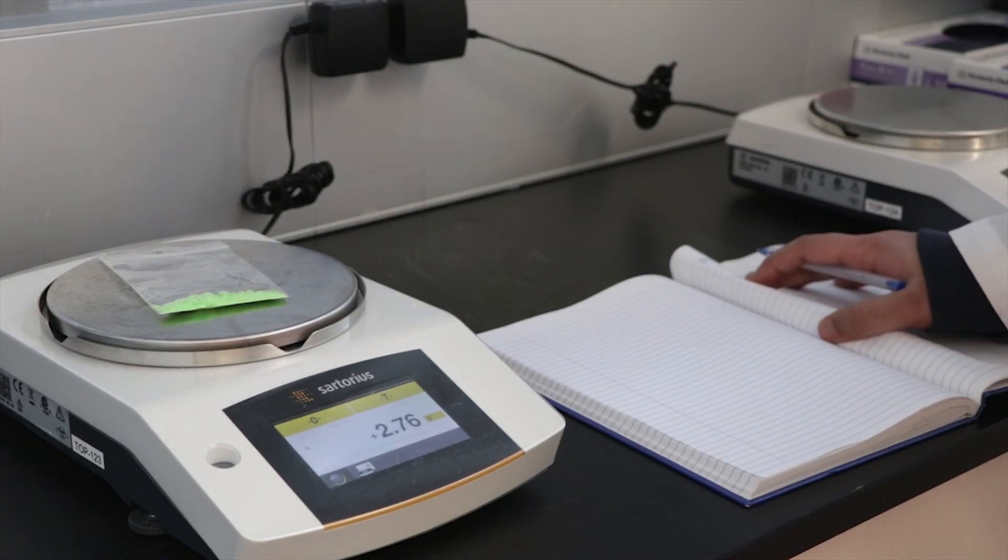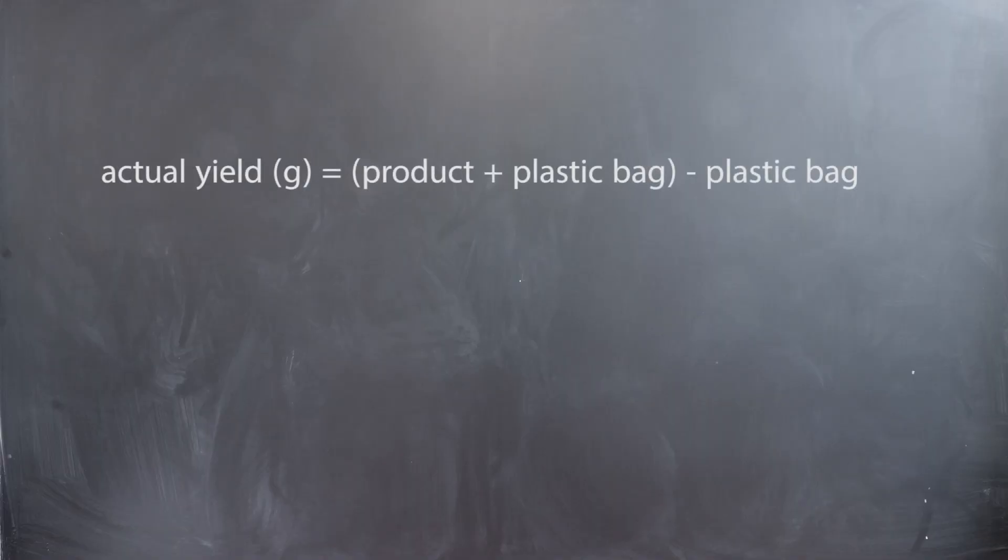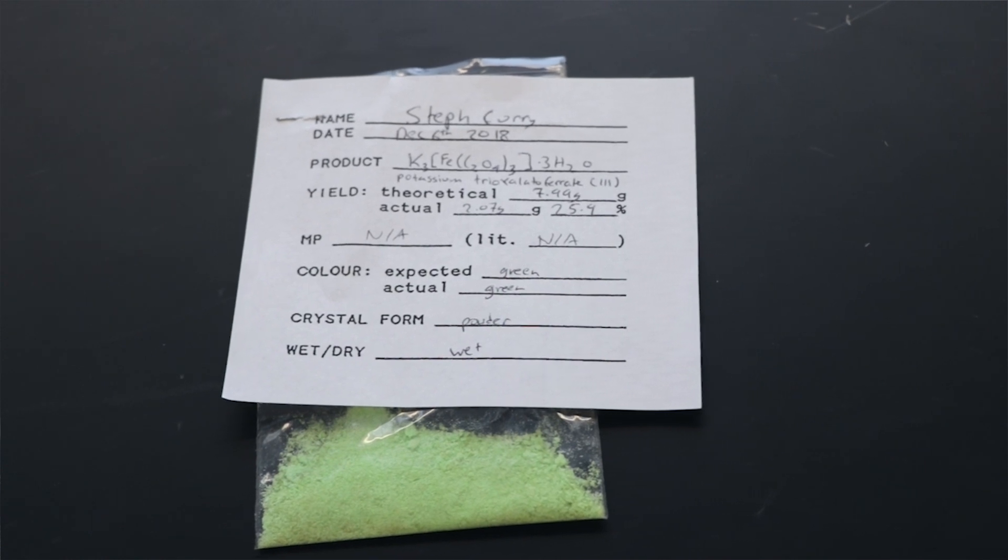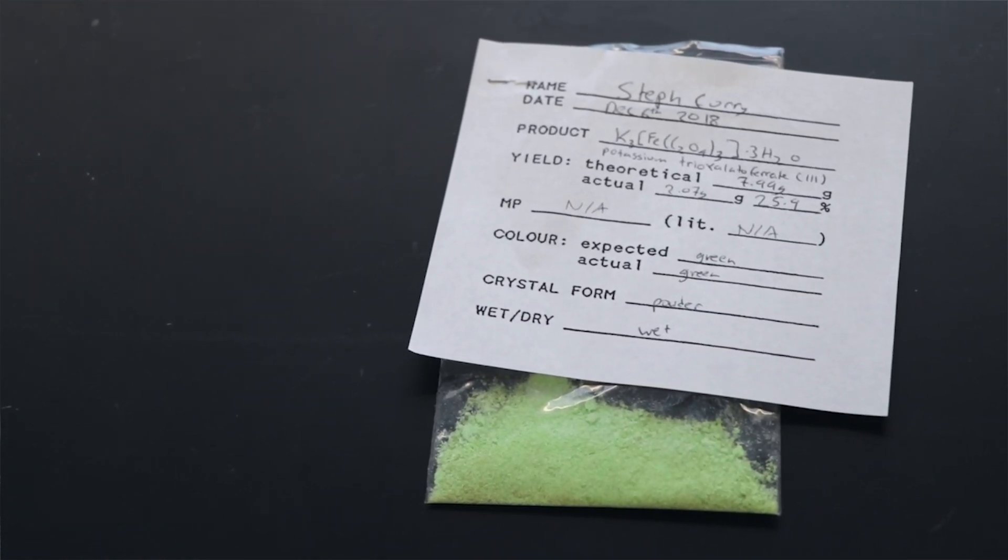The yield you have obtained will be the difference between the weight of the plastic bag and the weight of the product plus the plastic bag. After synthesizing your product, calculate your percent yield by dividing your actual yield by your theoretical yield and multiplying it by 100. Once you have done this, label your product sheet as shown.